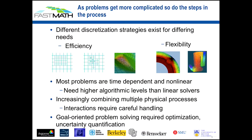If you're thinking about engineering problems like designing an airplane wing, these often require an additional loop around the whole PDE solution process. For example, you want to optimize the shape of the wing to minimize drag. You bring in things like optimization. And if you need to understand what uncertainty or error you've introduced in the process of discretizing your equations, there are higher-level techniques like optimization and uncertainty quantification that you also bring into the mix.